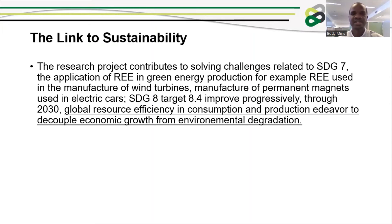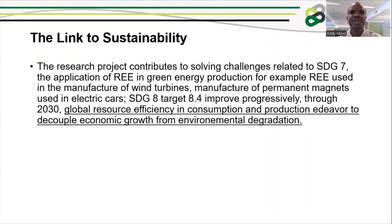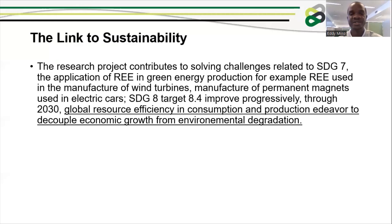The research also addresses SDG8 — global resource efficiency in consumption and production. Through agglomeration, environmental degradation is limited by not holding excess leaching reagent in the heap. Because resistance is reduced and solution flow channels are increased, most of the leaching reagent flows through and the pregnant solution can be collected efficiently, limiting the amount of leaching reagent irrigated into the heap that could otherwise affect the environment.